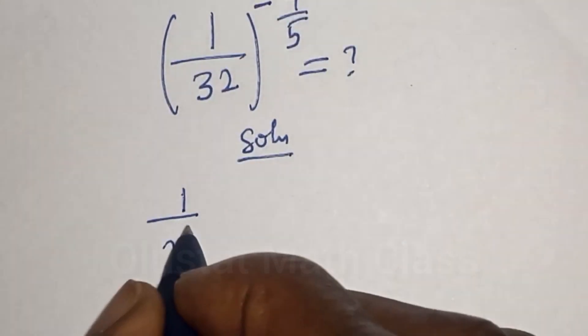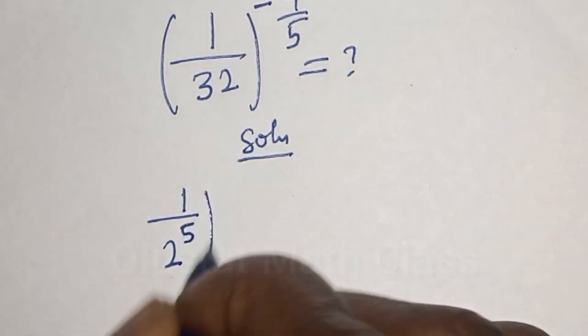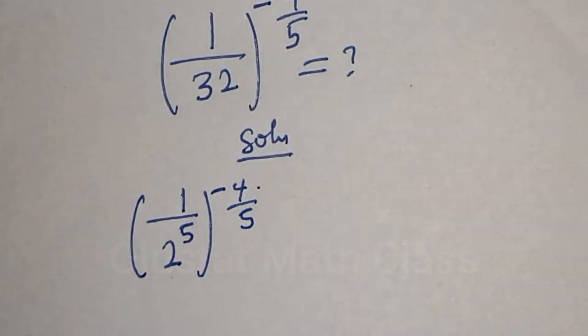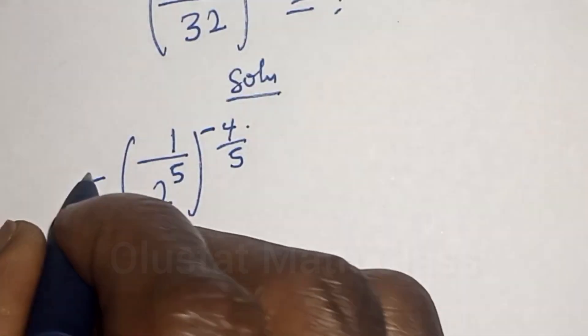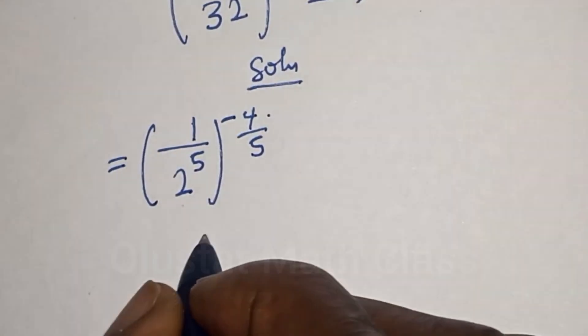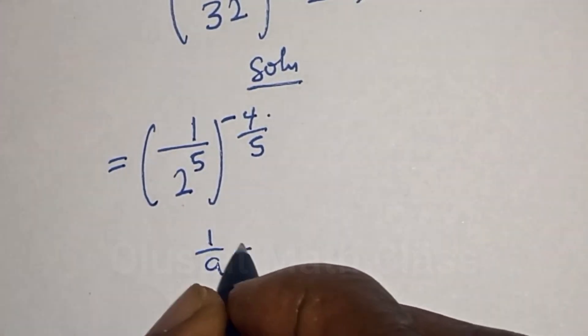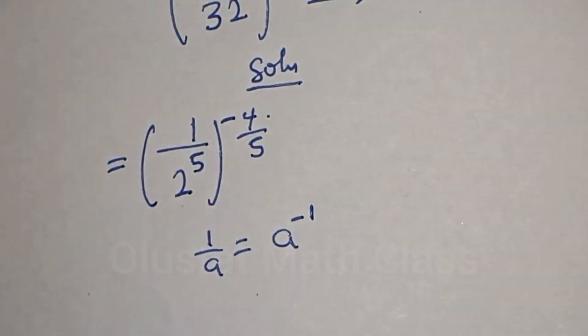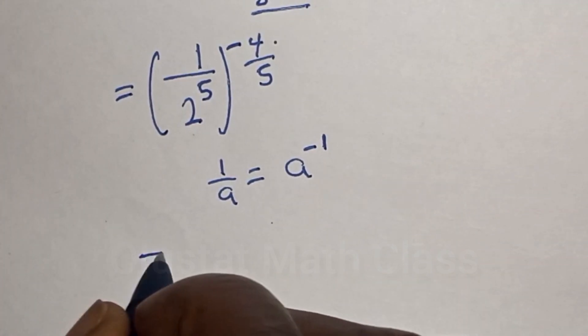This gives us 1 over 2 raised to the power 5, all raised to the power minus 4 over 5. Now if you have 1 over a, this is equal to a raised to power minus 1. Then this is equal to 2 raised to power minus 5, raised to power minus 4 over 5.